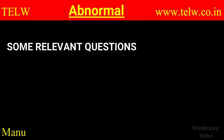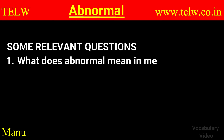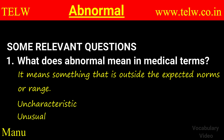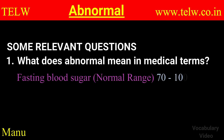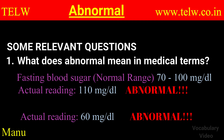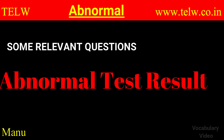Now let's look at some relevant questions. Question 1: What does abnormal mean in medical terms? It means something that's outside the expected norm or range. It's uncharacteristic, unusual — not the way you would normally find things. For example, the fasting blood sugar of a normal adult is in the range of 70 to 100 mg per dL. If the actual blood sugar in the sample is 110, it's abnormal. Similarly, if it's 60, it's abnormal. You don't want this — it's not desirable. This is called an abnormal test result.